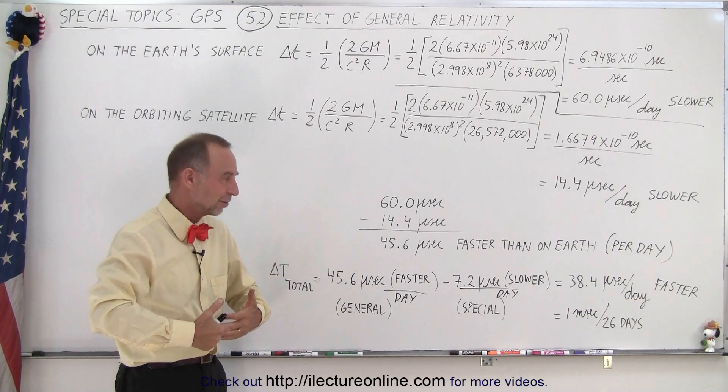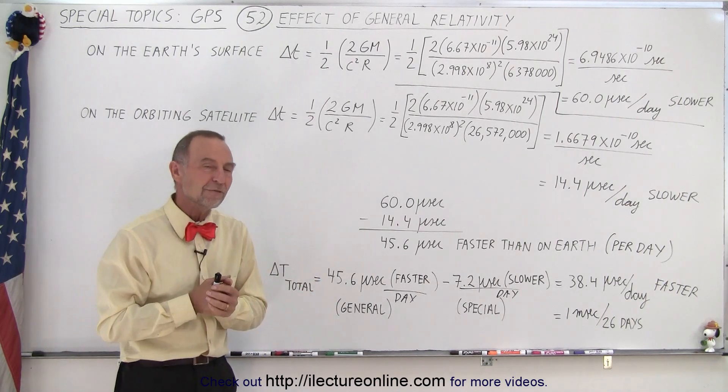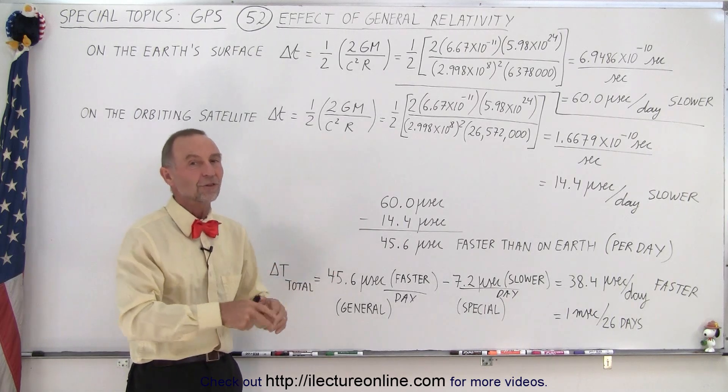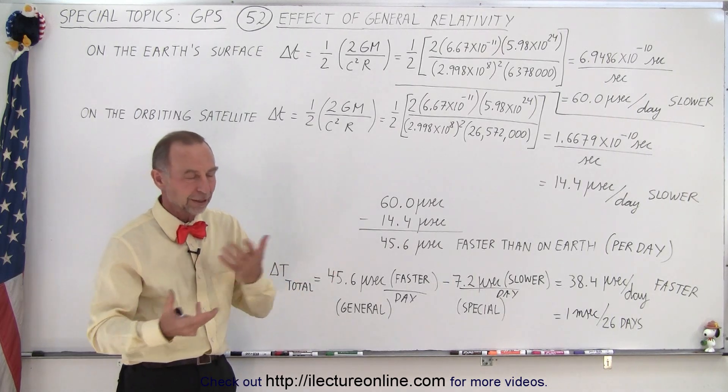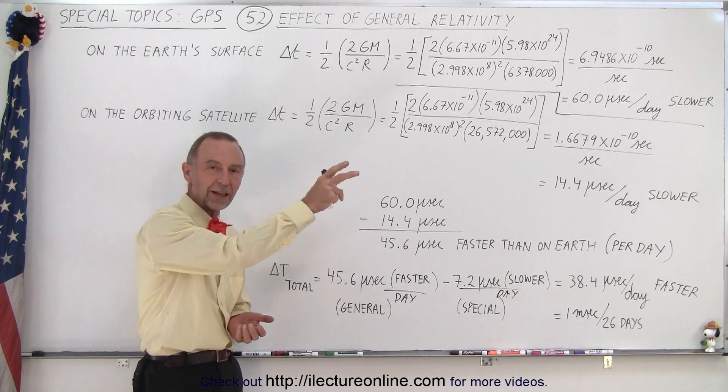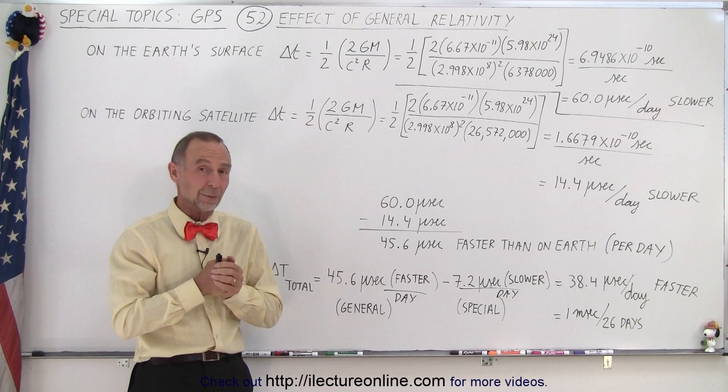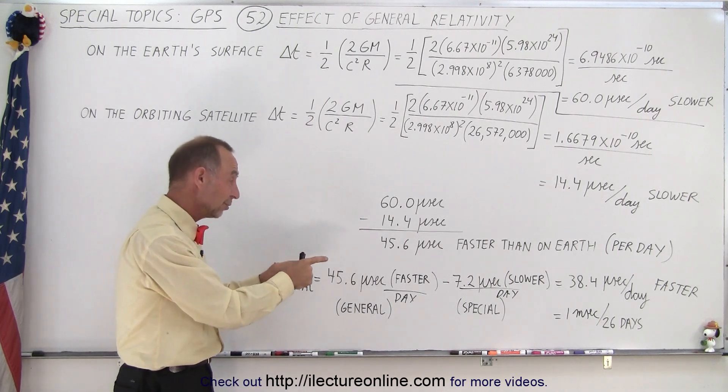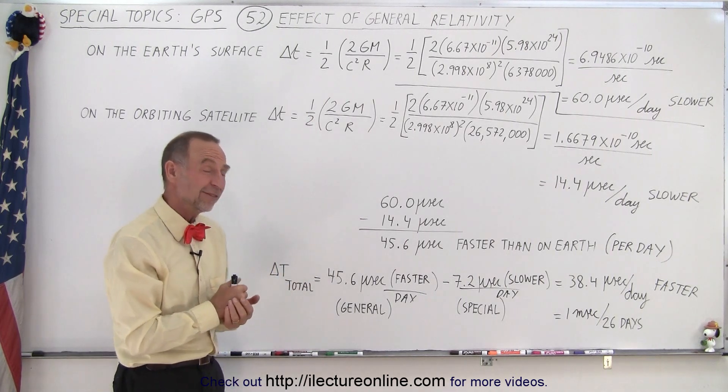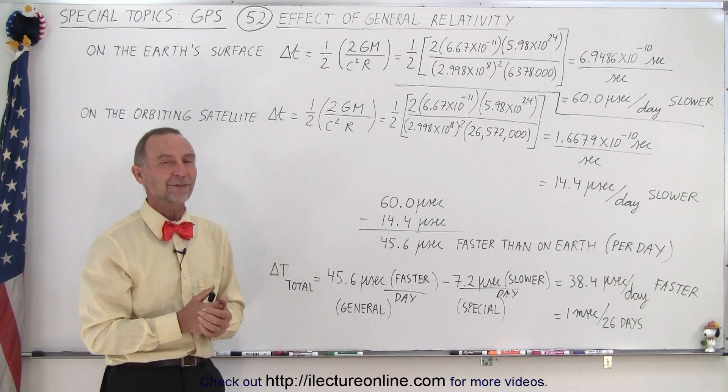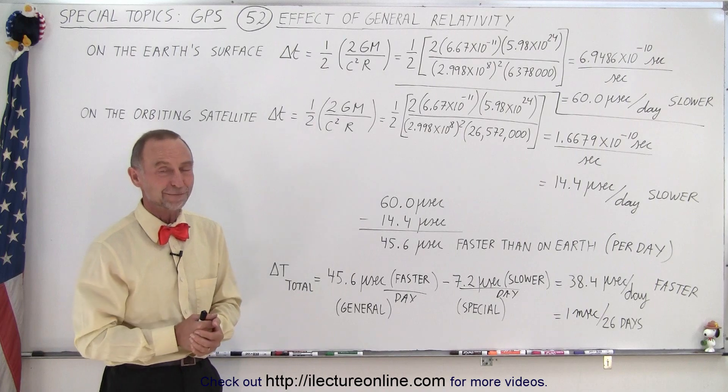So of course we regularly send new time information up to the satellites to make sure that we keep track of this difference as well as all the other differences that occur. But for the special and general relativity equations we have to take that into account, and therefore that is a significant amount that we need to keep track of and adjust the satellites for on a regular basis. And that is how it's done.